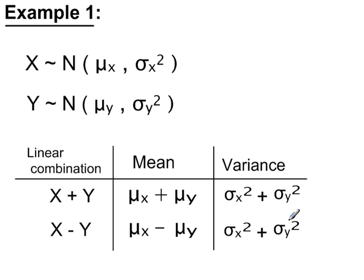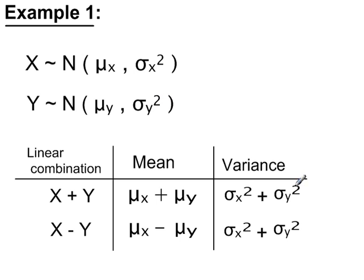One of the reasons you don't subtract variances is that if you subtract them, you could end up with a negative value. And a variance is a measure of spread, and measures of spread are never negative. And if you were trying to work out a standard deviation and your variance was negative, you could end up trying to find the square root of a negative number, which is a nonsense. Also, a key point is when you're adding or subtracting normal variables, you don't add standard deviations either. You only add variances, never standard deviations.